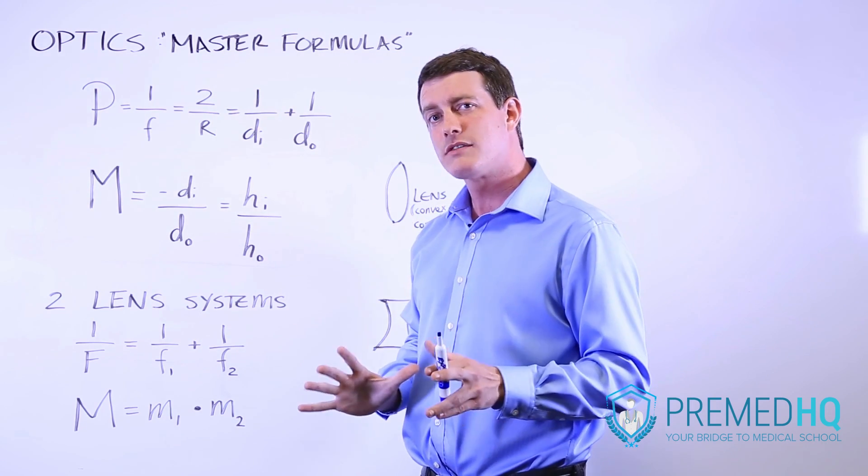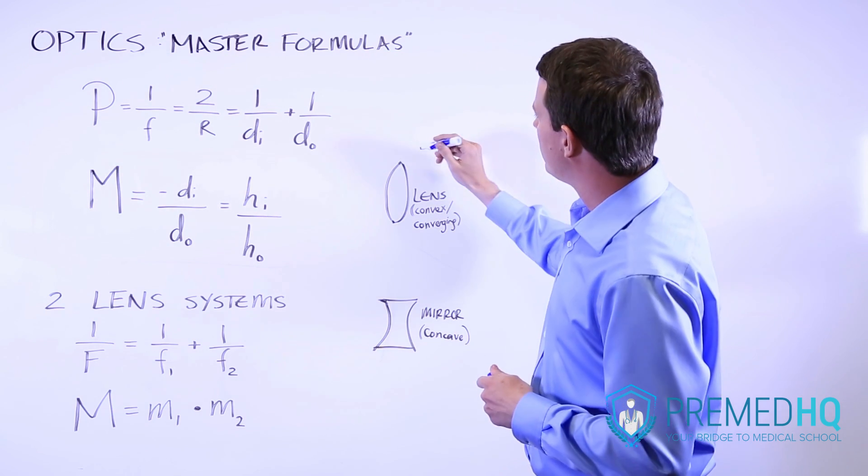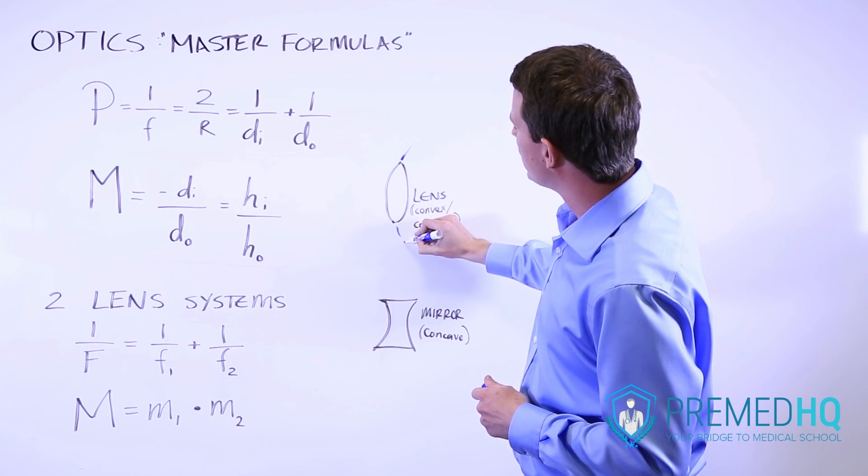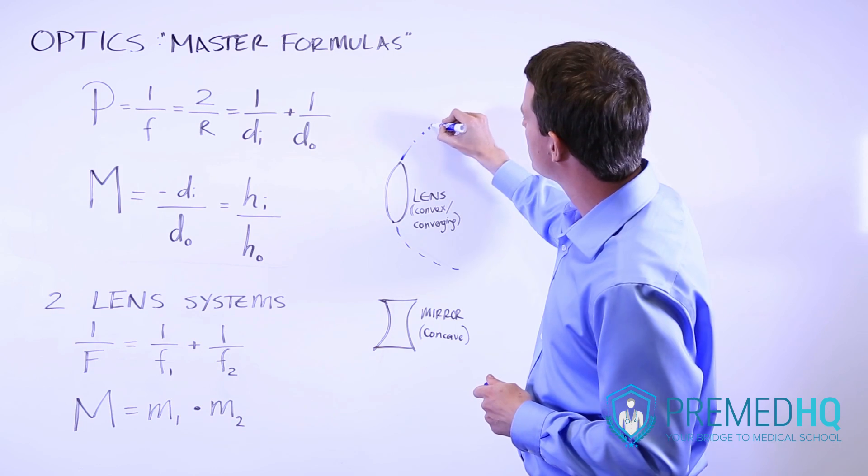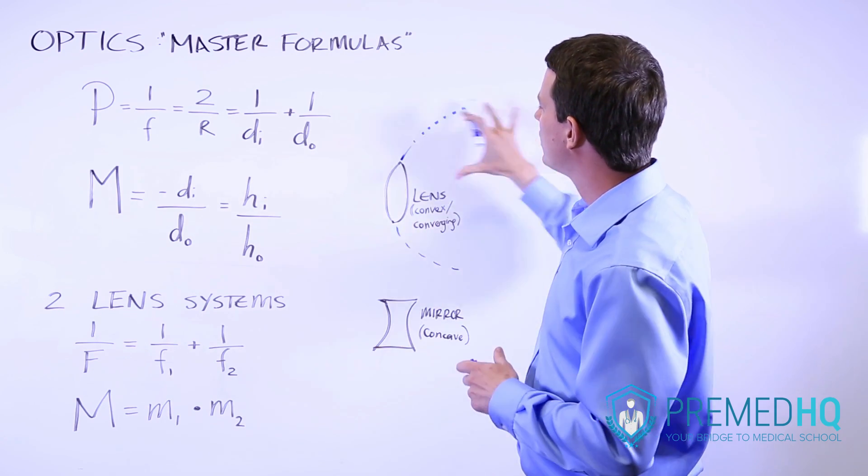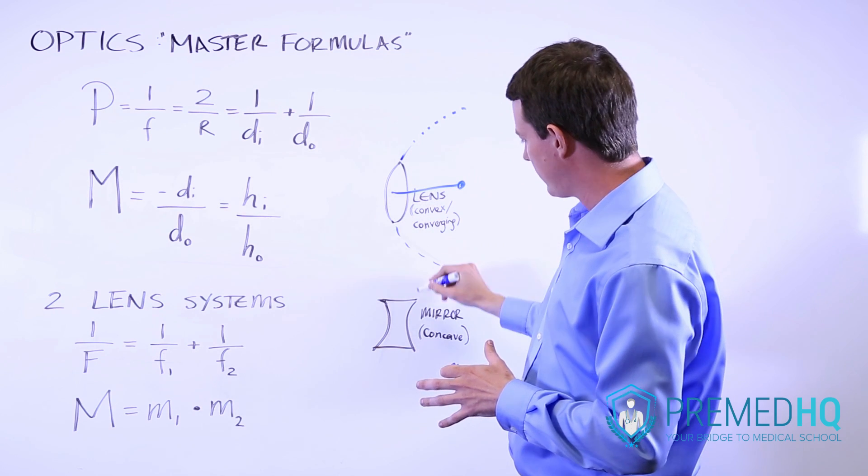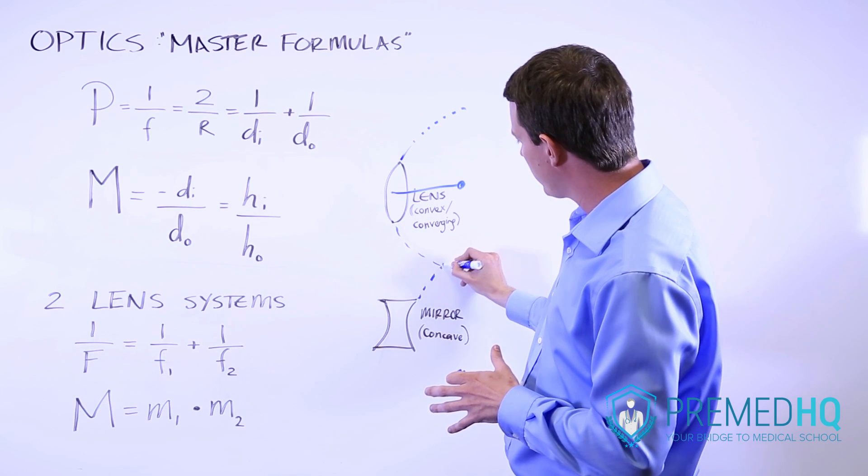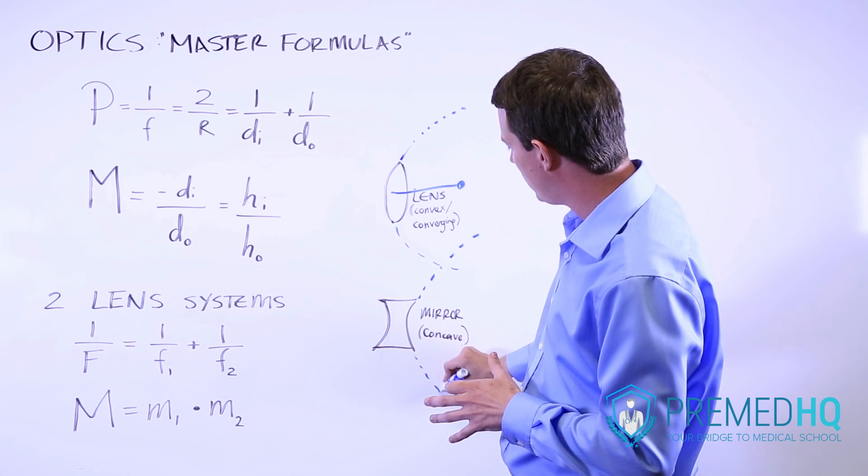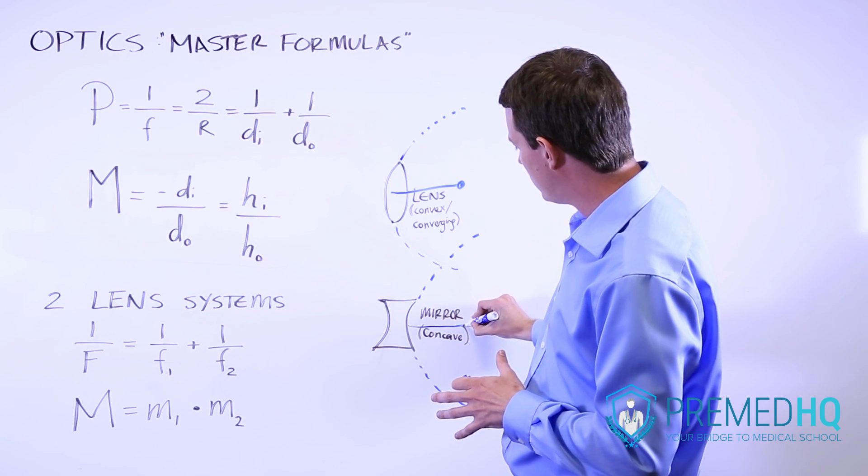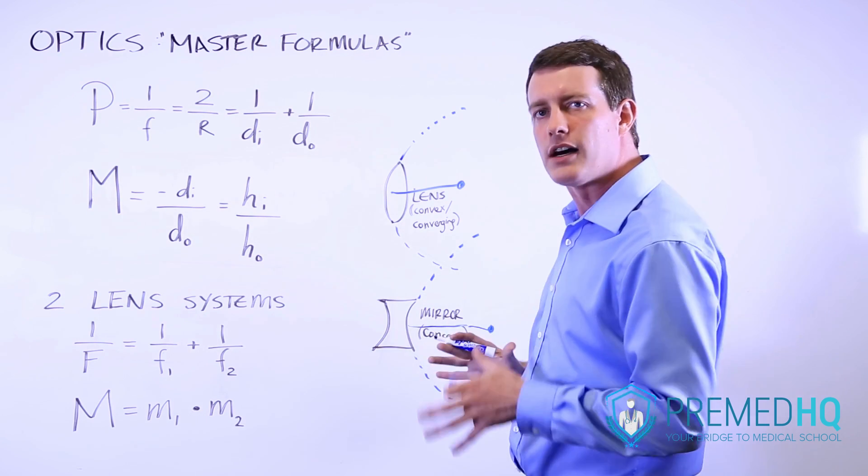Now what is a radius of curvature? It is the radius of the circle that you would make if you were to turn the entire curvature of this lens into a complete circle. That circle would have a given radius, and it's true for a concave lens or mirror as well. This could be turned into a circle and that would have a radius itself.